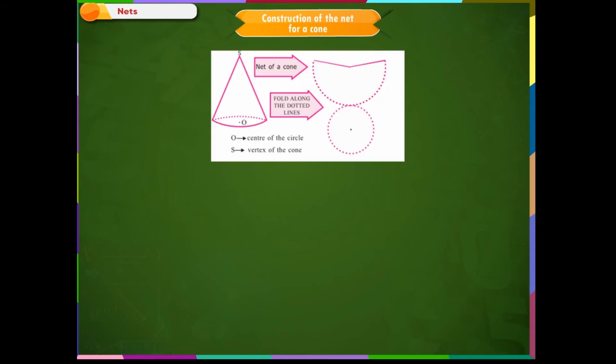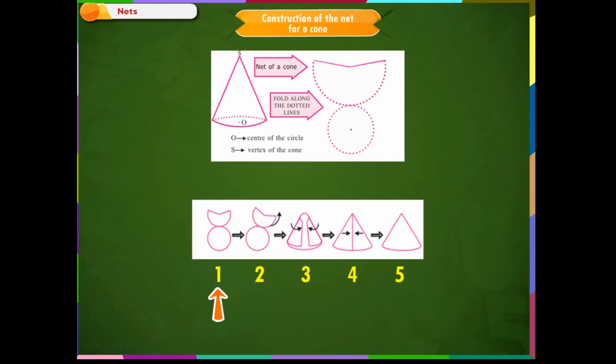Step 1: Observe the cone shown on the screen. The net of the cone will look like this when folded along the dotted line. Step 2: Draw two circles of same radius. Cut out one sector of one of the circles.